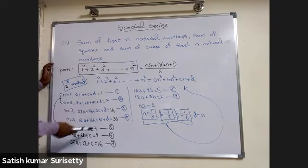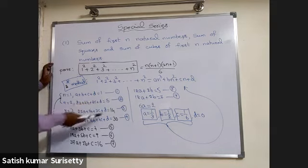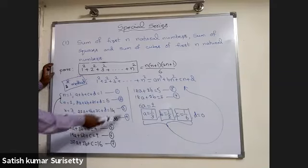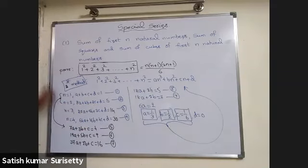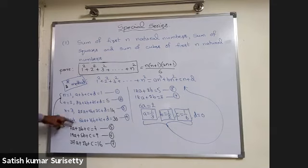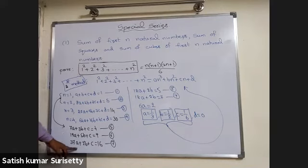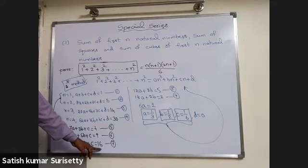Use first and second equations to eliminate d. Use second and third to eliminate d. Use third and fourth to eliminate d. Then you get three more equations: 7a plus 3b plus c equals 4; 19a plus 5b plus c equals 9; 37a plus 7b plus c equals 16.